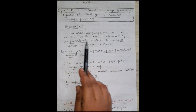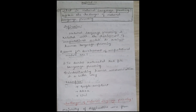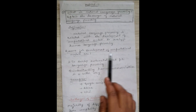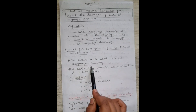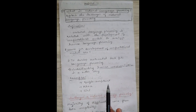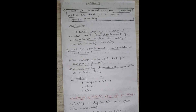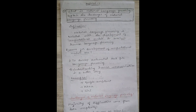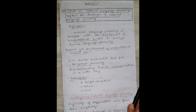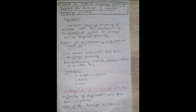Natural language processing is the development of computational models to analyze human language processing. We want to develop computational models that can process language and understand human communication. For example, Google Assistant, Alexa, or Siri — if we say 'Alexa, please turn on the TV,' it will turn on the TV because it is analyzing what we are speaking and acting according to our communication. This is natural language processing.